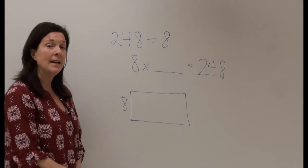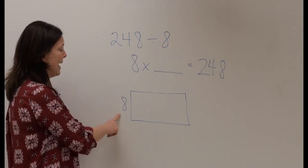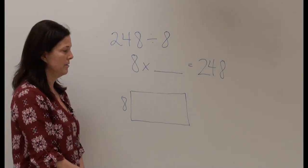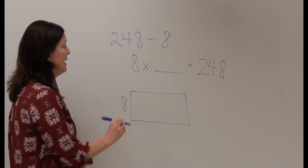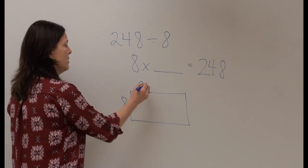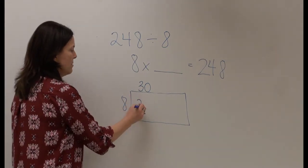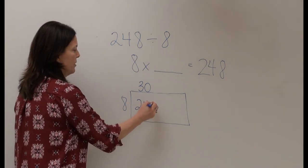So I'm going to begin by asking myself 8 times what factor will get me close to 248, and I know that 8 times 30 will give me 240. So 30 times 8 will be 240 students.